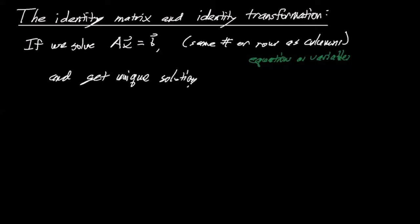Then basically what happened is A augmented with b row reduced to a matrix that looks like this, right? Just as an example with four rows and columns. So it looks something like this right, we get a pivot in each row, a pivot in each column.